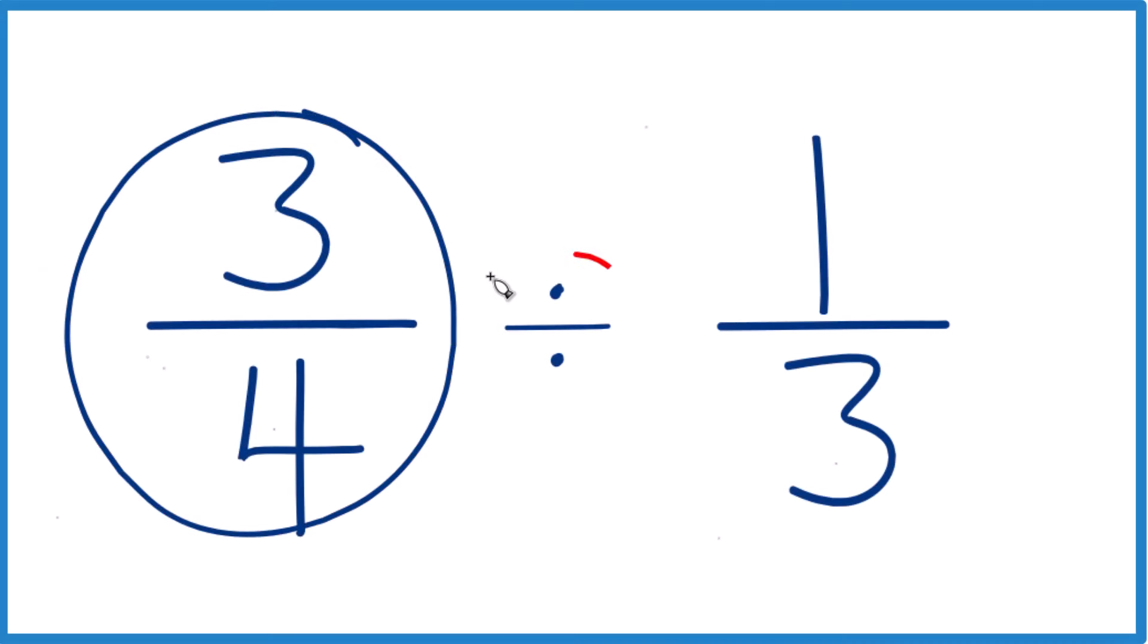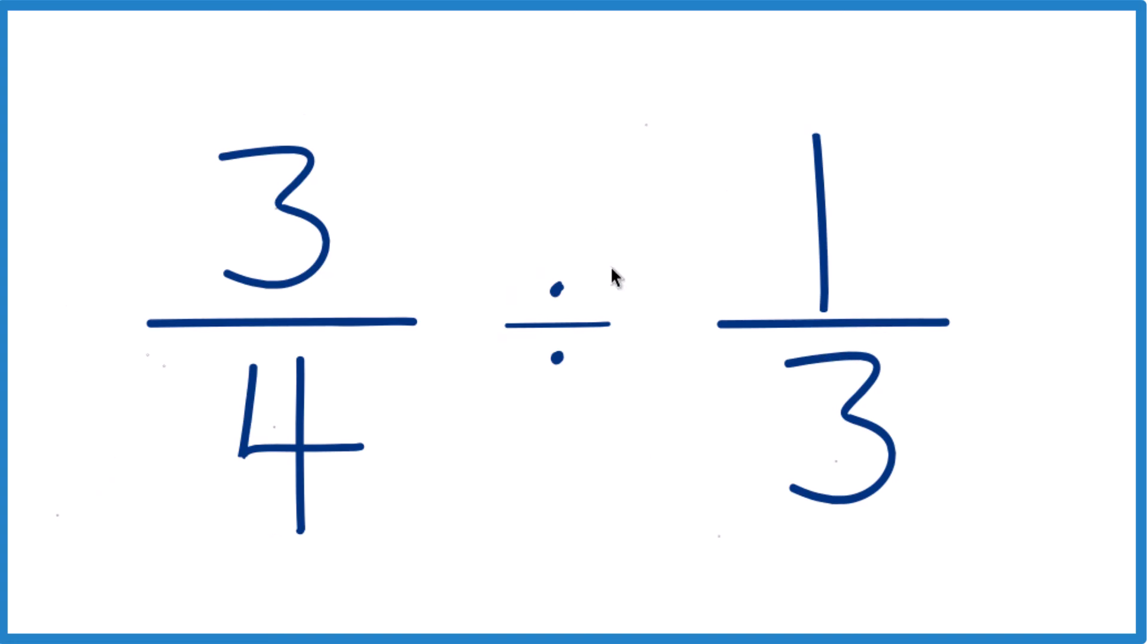Let's figure out three-fourths divided by one-third, and here's how you can do it. So instead of division, let's call it multiplication.